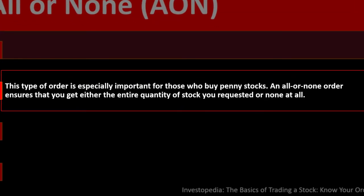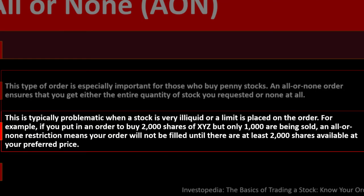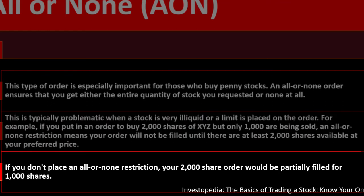An all-or-none (AON) order is especially important for those who buy penny stocks. An AON order ensures you get either the entire quantity of stock requested or none at all — typically used when a stock is very illiquid or a limit is placed on the order. For example, if you place an order to buy 2,000 shares of XYZ but only 1,000 are available, an AON restriction means your order will not be filled until all 2,000 shares are available at your preferred price.